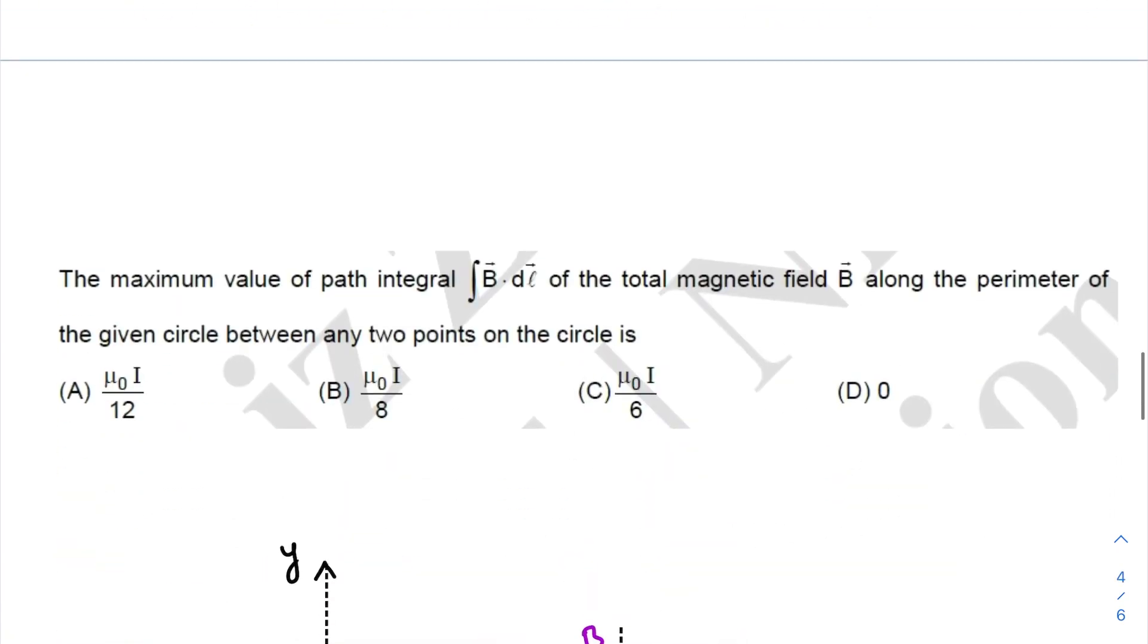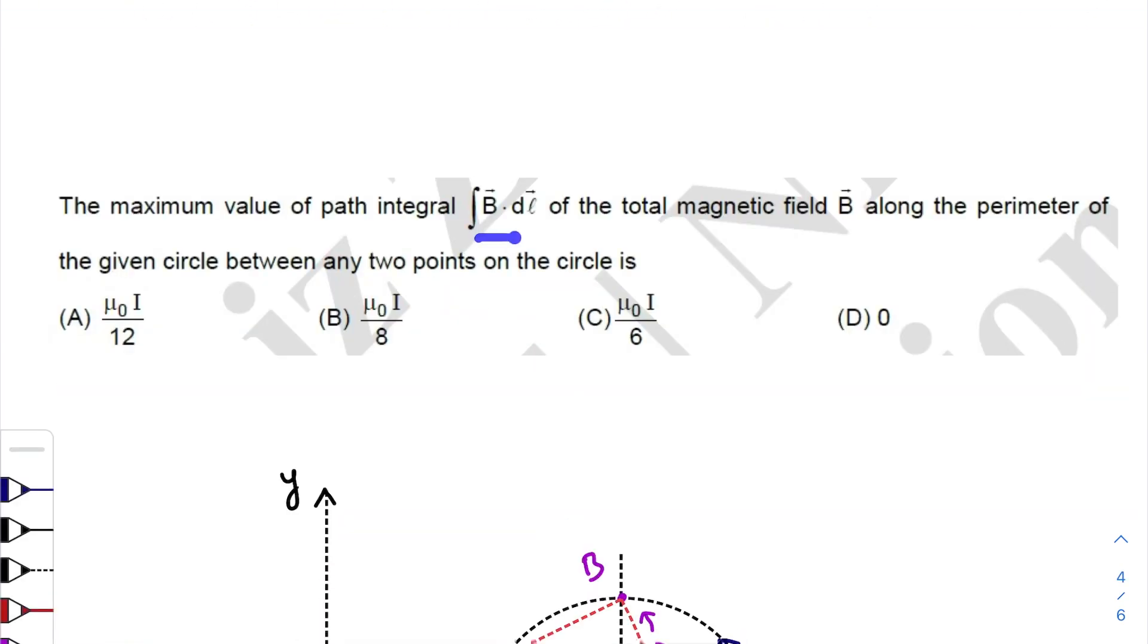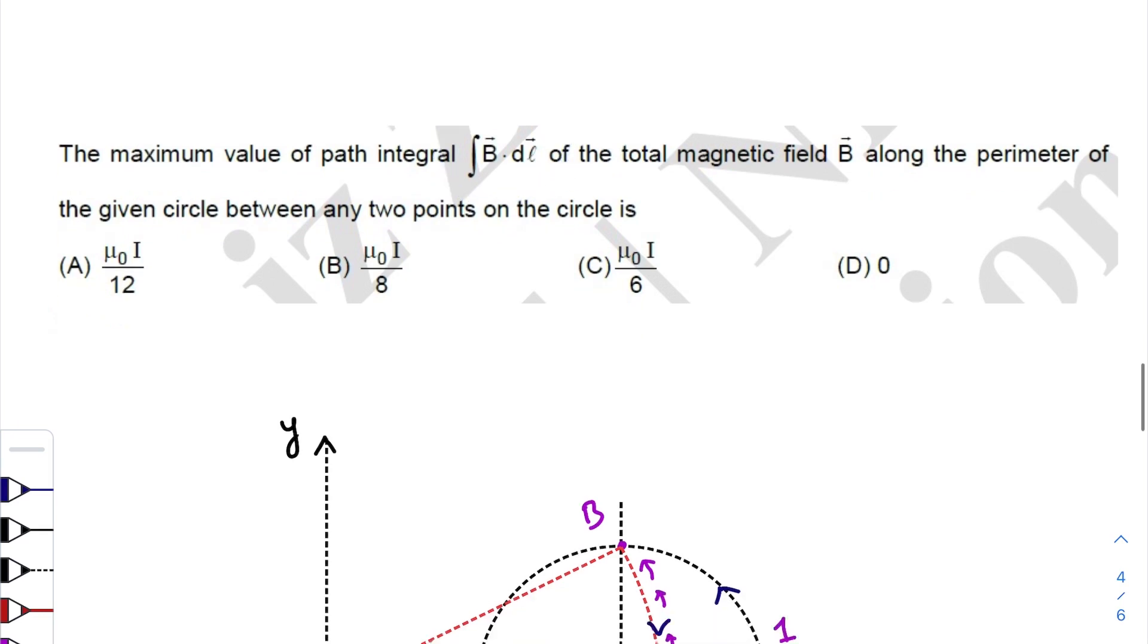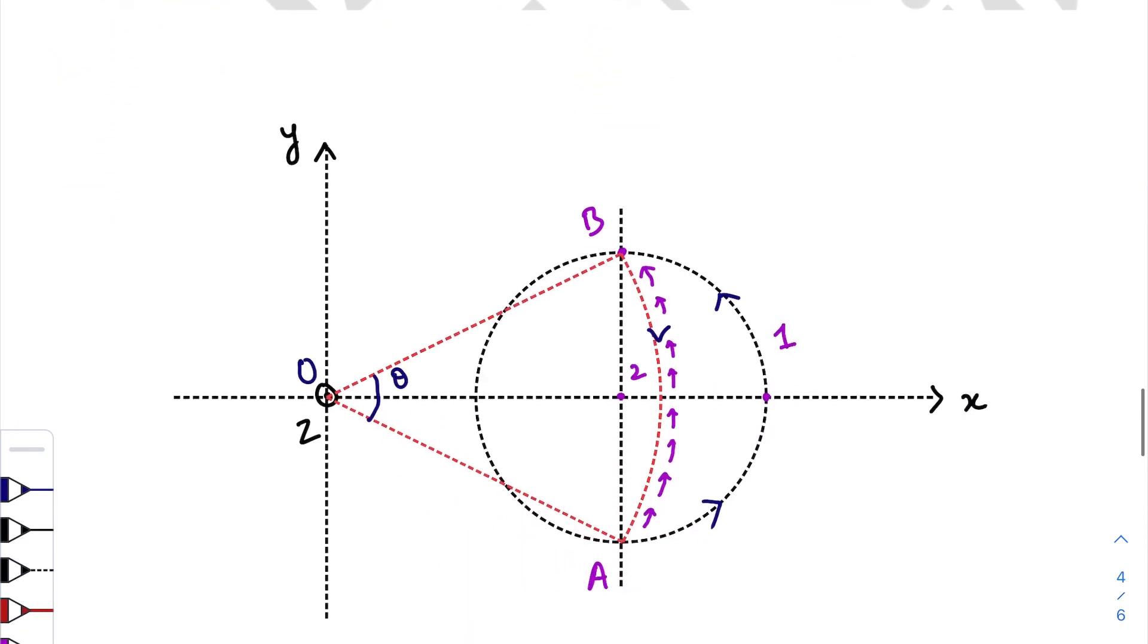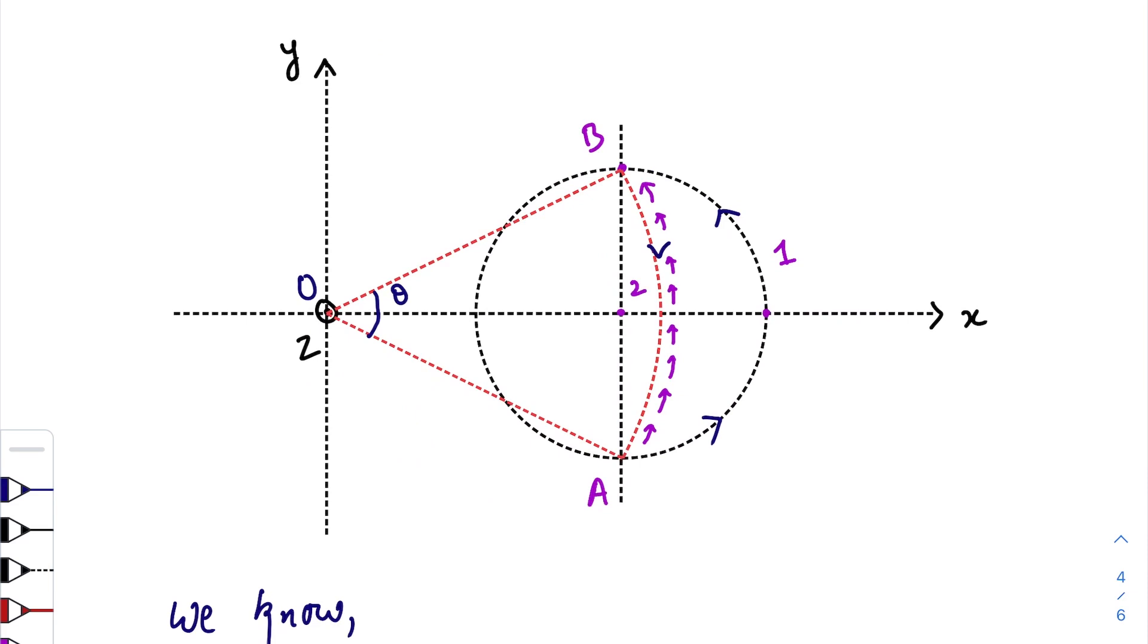The second question: the maximum value of path integral B dot dl of the total magnetic field along the perimeter of the given circle. So we need to find the maximum value of integration B dot dl along the perimeter.